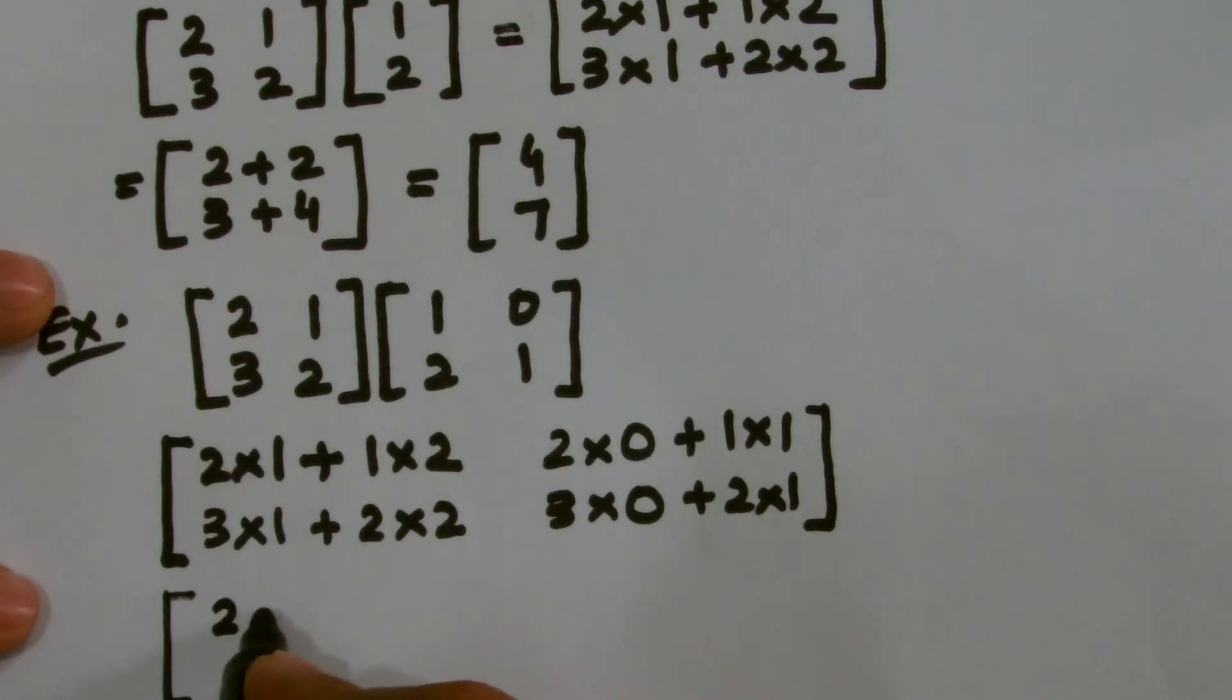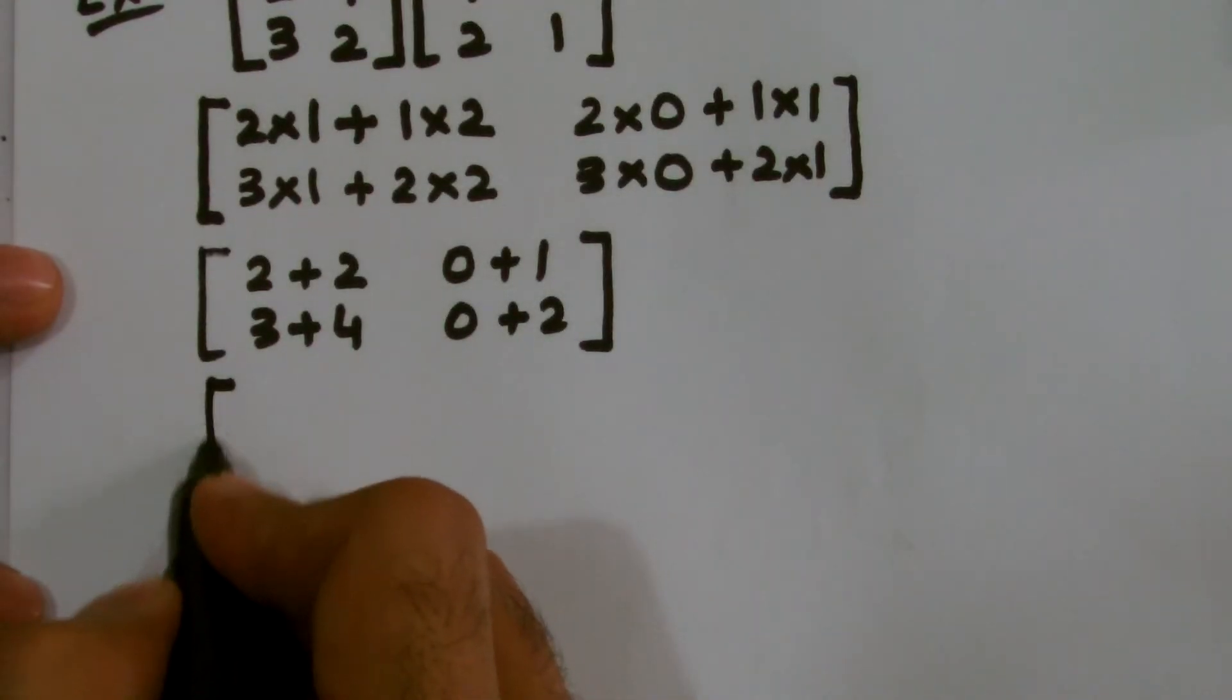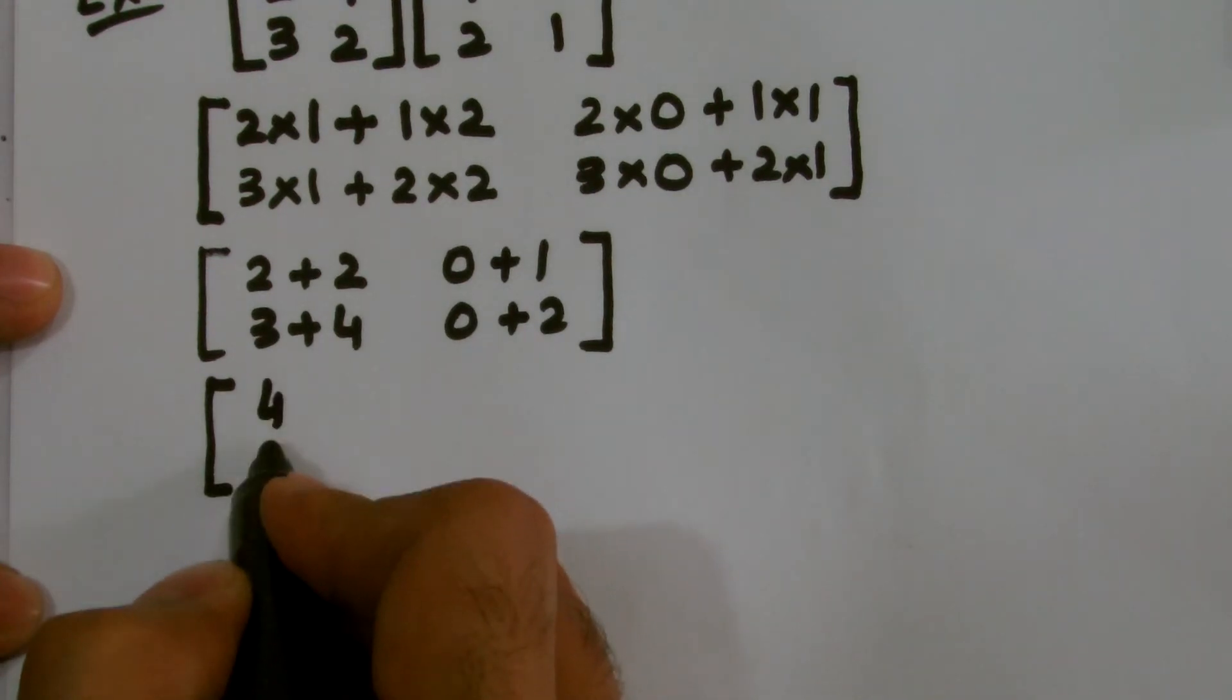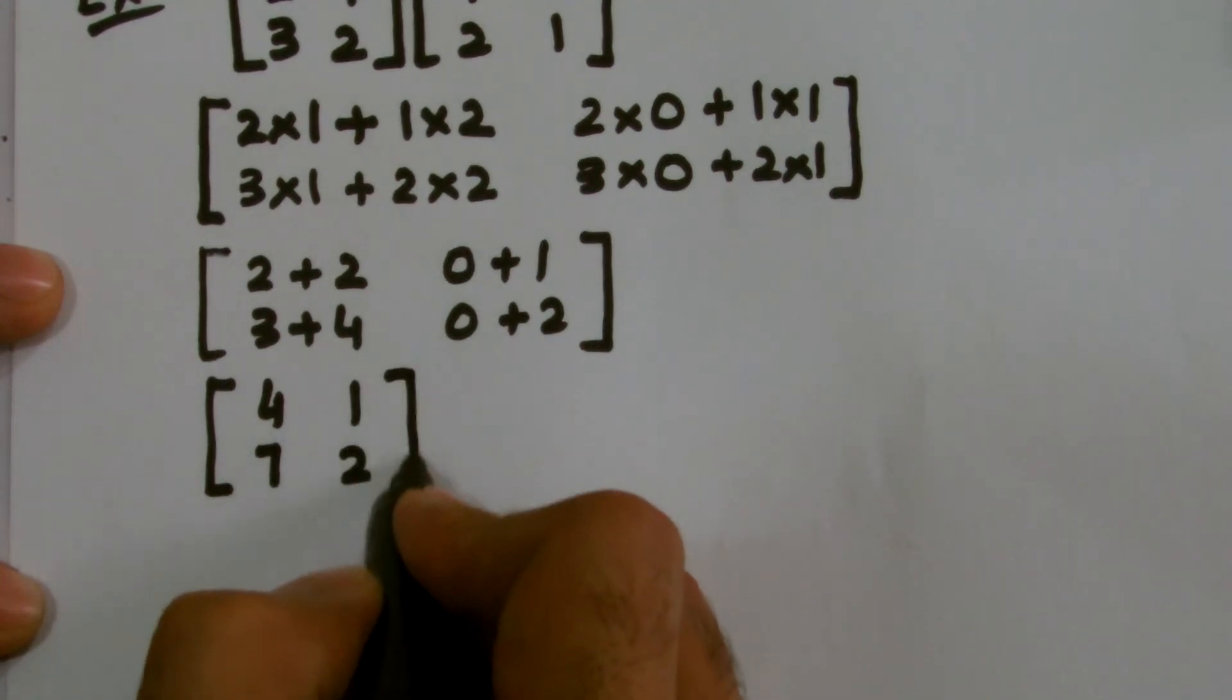2 into 1, I have 2, 1 into 2, this is 2, 3 into 1 is 3, 2 into 2 is 4. Similarly, 2 multiplied by 0, we get 0, 1 into 1 is 1, it is a 0 again, and 2 into 1 is 2. So the final answer is 2 add 2, I get 4, 3 add 4, I get 7, 0 add 1, they remain the same, and that's my final answer.